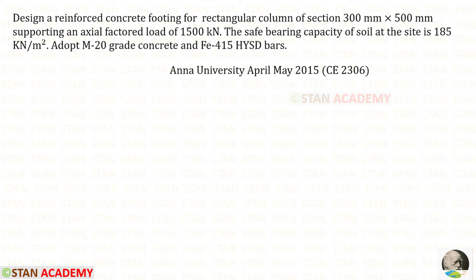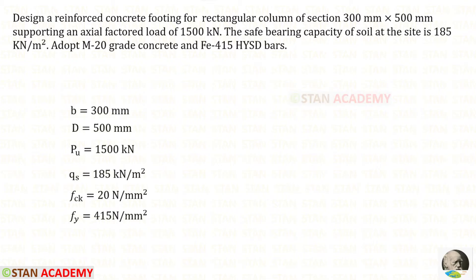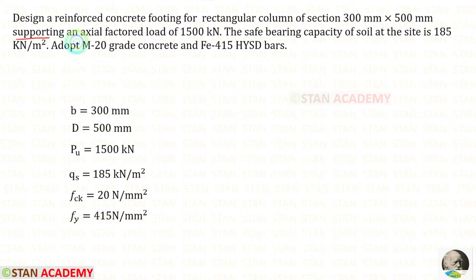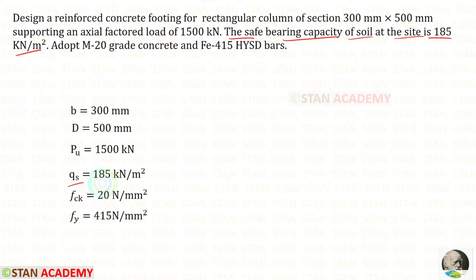Hello everyone. Today we are going to design a rectangular footing. Design a reinforced concrete footing for a rectangular column of section 300 mm by 500 mm, supporting an axial factored load PU of 1500 kilonewton. The safe bearing capacity of soil QS is 195 kN/m². Adopt M20 grade concrete and Fe 415 HYSD bars. FCK is 20, FY is 415.